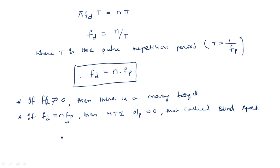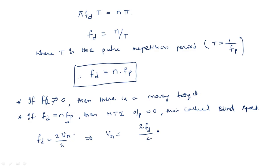To find the velocity of a target at blind speed: we know FD = 2·VR/λ, so VR = λ·FD/2. Substituting FD = n·FP, the blind speed velocity is VR = n·λ·FP/2. This is the relative velocity with which the target is moving under the blind speed condition.